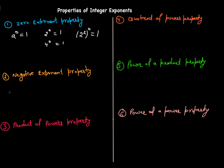The second property is the negative exponent property. If you have a number with a negative exponent, we bring the number to the denominator and the exponent becomes positive. So a raised to power negative n equals one over a raised to power n, where a is not equal to zero. For example, two raised to power negative one equals one over two raised to power positive one. Three raised to power negative two equals one over three raised to power two.